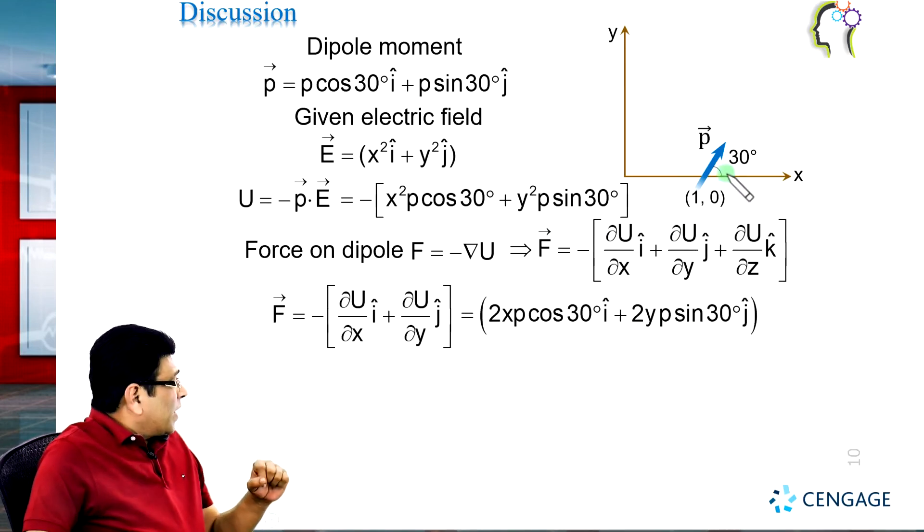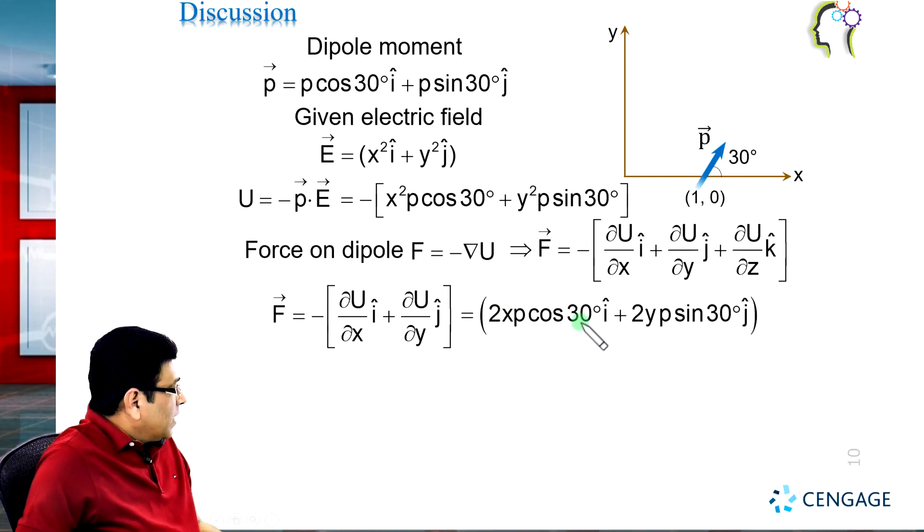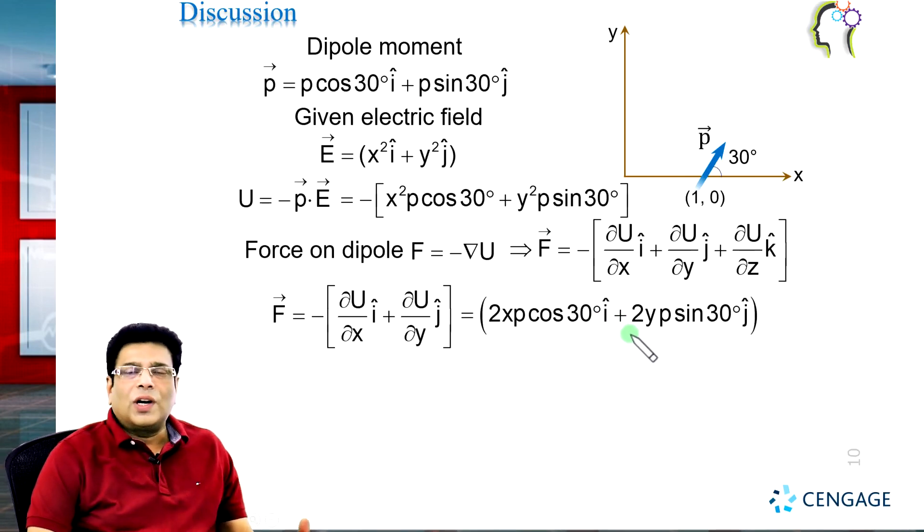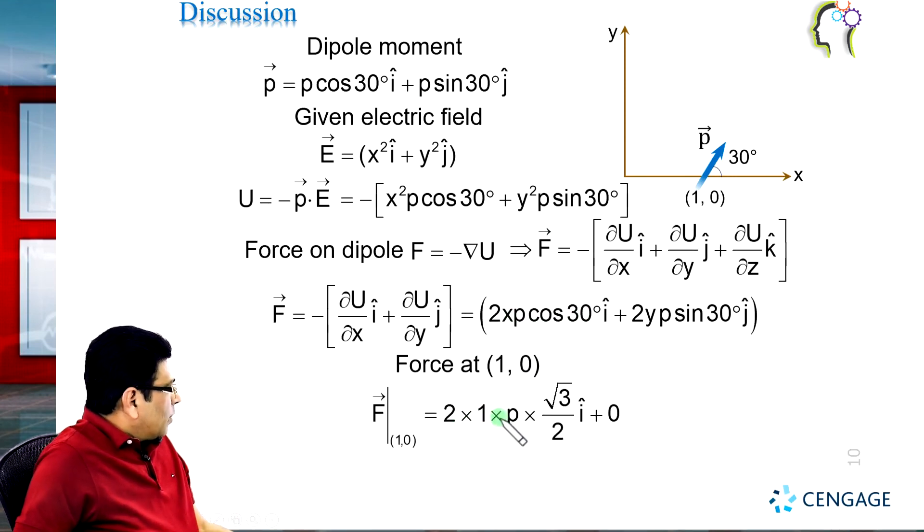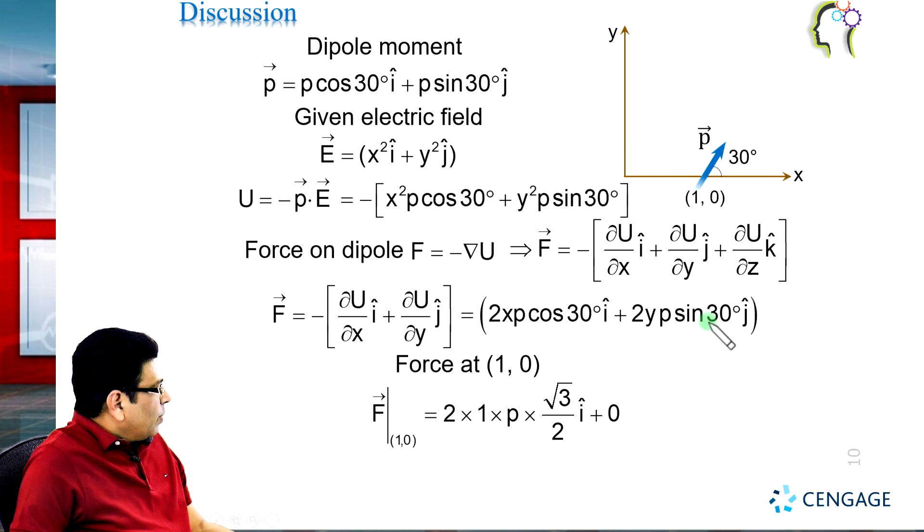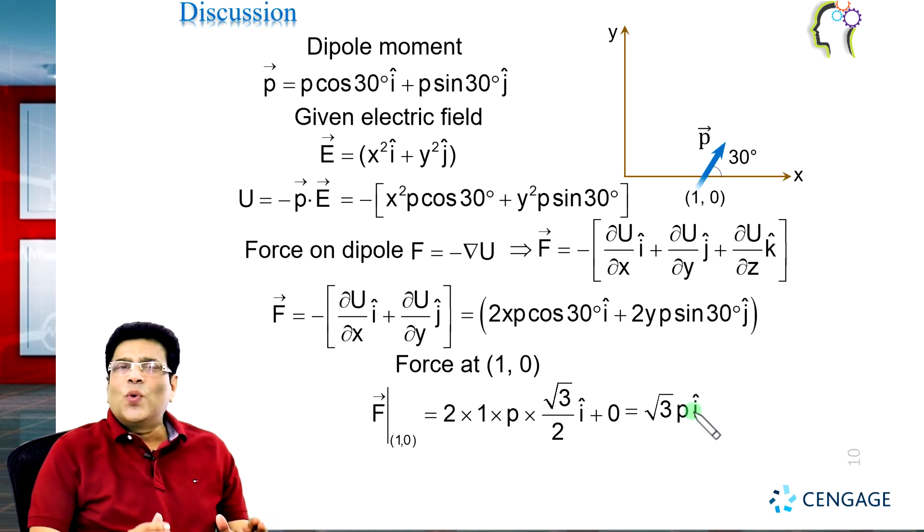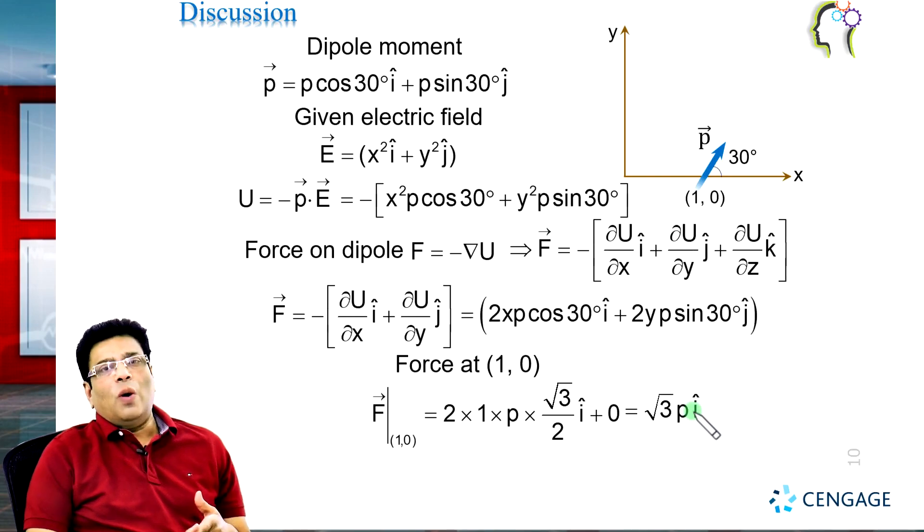Now the coordinate is (1,0). We substitute x equals 1 and y equals 0, and substitute the values of cos 30° and sin 30°. The force should equal 2 times 1 times p times cos 30°, which equals root 3 by 2. If we substitute y equals 0, this term will be 0. After calculation, the force equals root 3 p i cap. This is the force on the dipole placed in a non-uniform electric field.